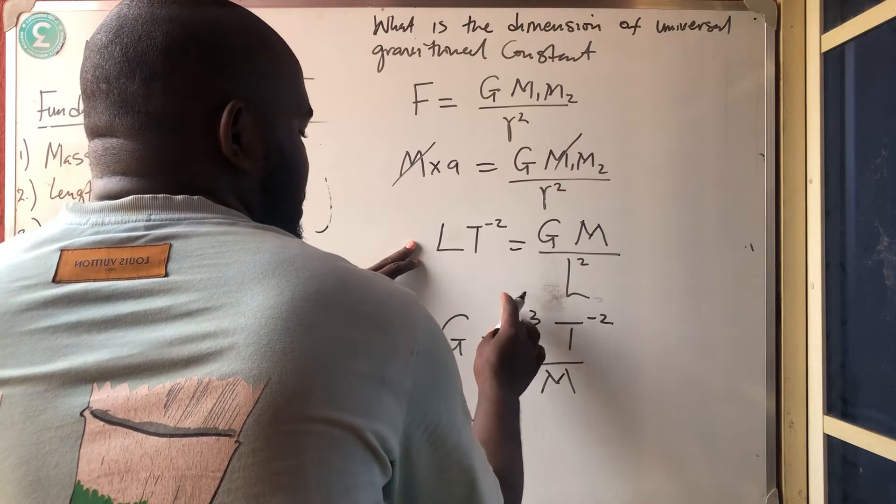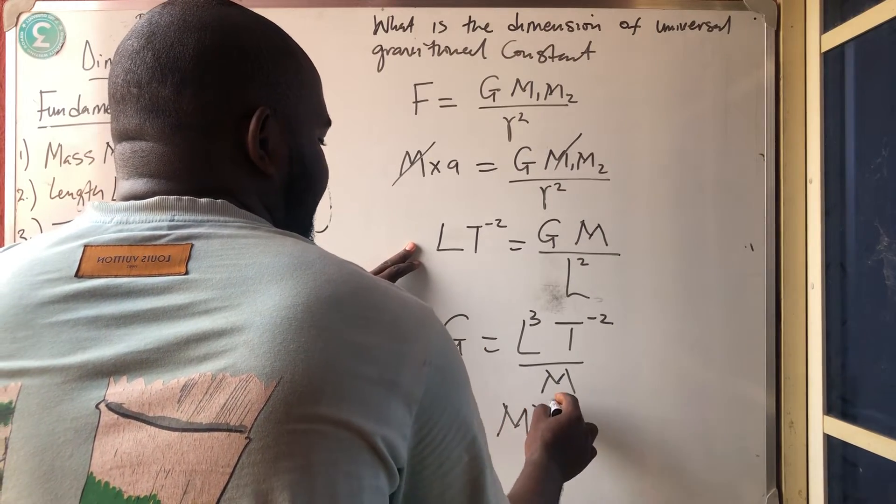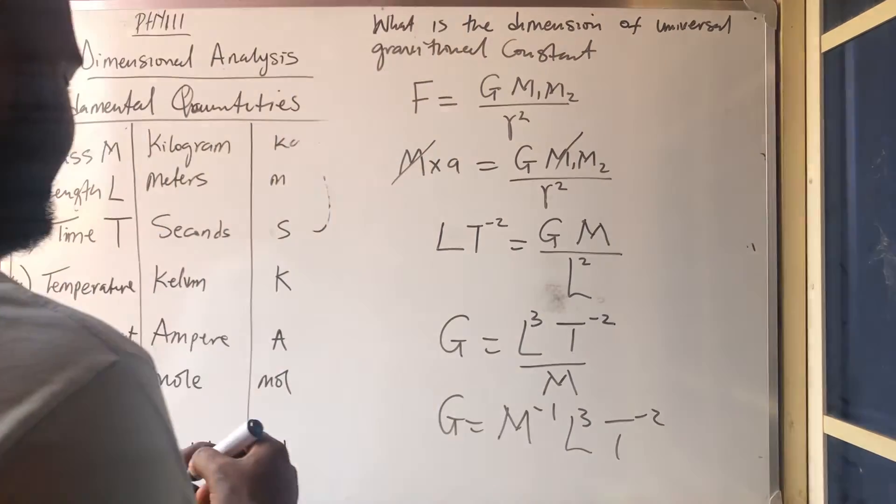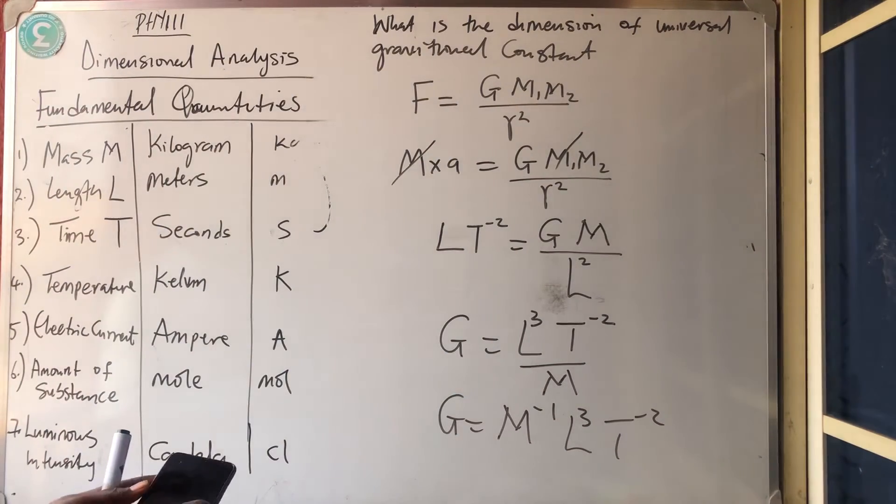So which is what? G is equal to, if M is coming up, it will be what? M minus 1, L3, and then T minus 2. As simple as that.